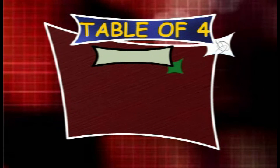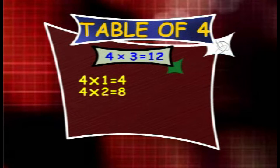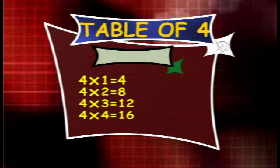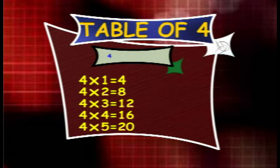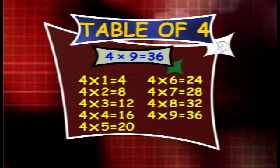Table of 4. 4 1s are 4, 4 2s are 8, 4 3s are 12, 4 4s are 16, 4 5s are 20, 4 6s are 24, 4 7s are 28, 4 8s are 32, 4 9s are 36, 4 10s are 40.